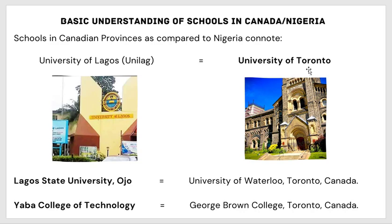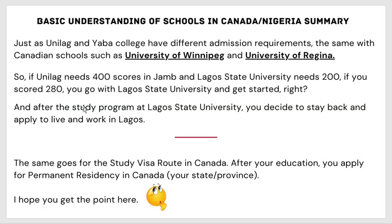When we say UNILAG, we are just saying University of Toronto. If we say Lagos State University, we are just saying University of Waterloo in Canada. Yaba College is like George Brown College in Canada. Just as UNILAG and Yaba College have different admission requirements, the same applies to Canadian schools like the University of Winnipeg and Regina. If one needs a higher score and you qualify for the lower one, you go to that one and get started.